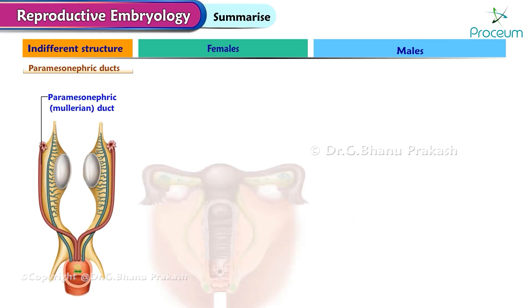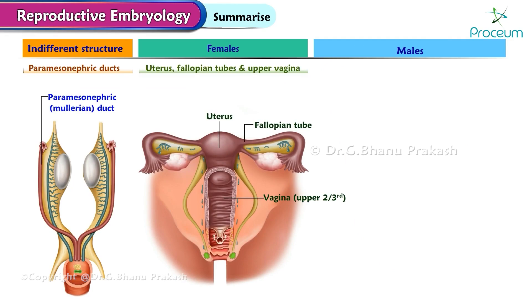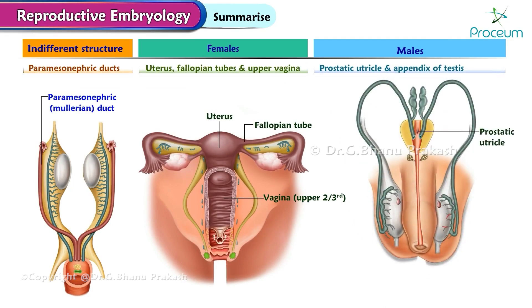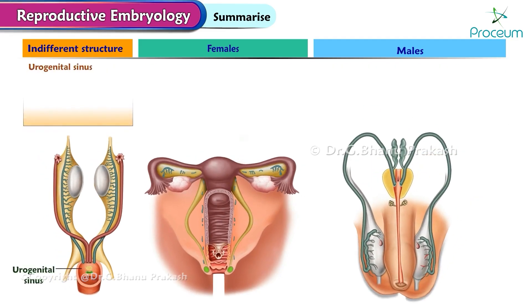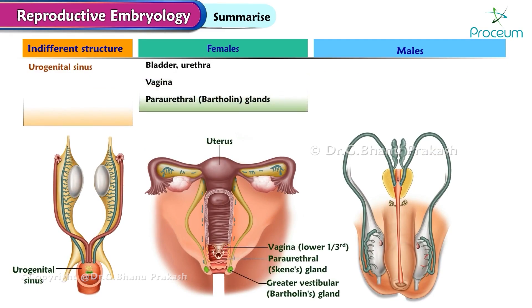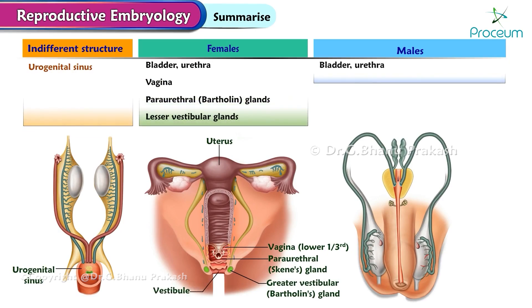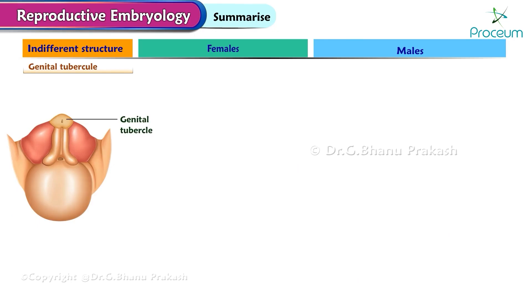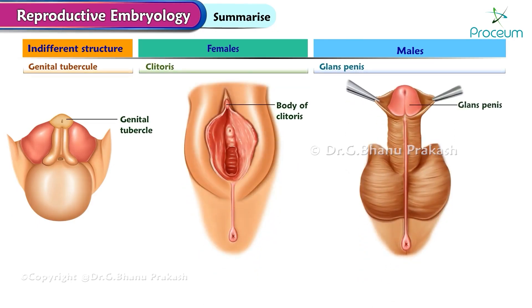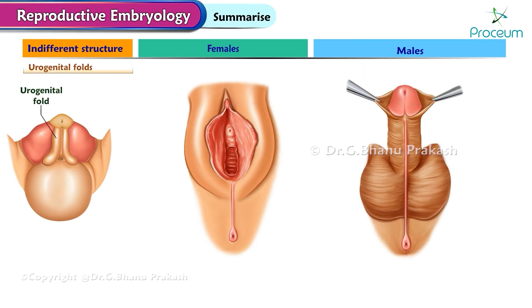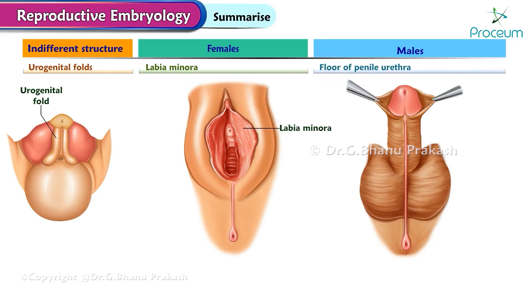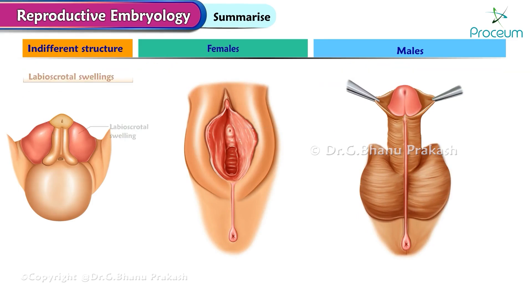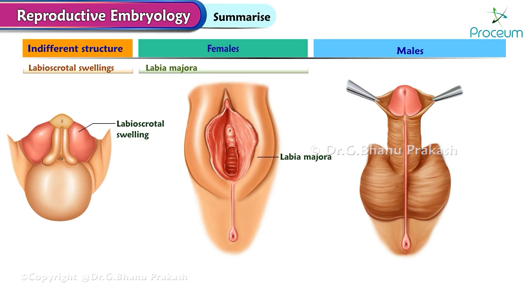Paramesonephric ducts give rise to the uterus, fallopian tubes, and upper vagina in females, while in males they contribute to the prostatic utricle and appendix of the testis. The urogenital sinus develops into the bladder, urethra, vagina, paraurethral and Bartholin's glands, and lesser vestibular glands in females, and the bladder, urethra, prostatic utricle, prostate gland, and bulbourethral glands in males. The genital tubercle forms the clitoris in females and the glans penis in males. Urogenital folds differentiate into the labia minora in females and the floor of the penile urethra in males. Labioscrotal swellings develop into the labia majora in females and the scrotum in males.